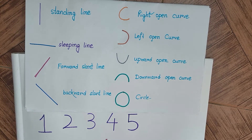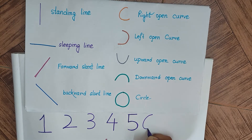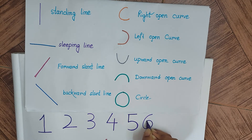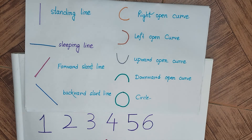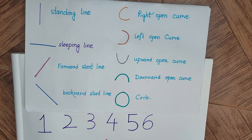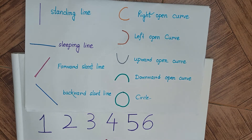Number 6. For 6, we will be using a right open curve like this, and then from the end of the right open curve, we will just join the beginning from where we started. Basically this is a downward open curve, but it is easy for children to teach them that we should be joining the end of the right open curve to the middle of the curve on the left, which will give us 6.